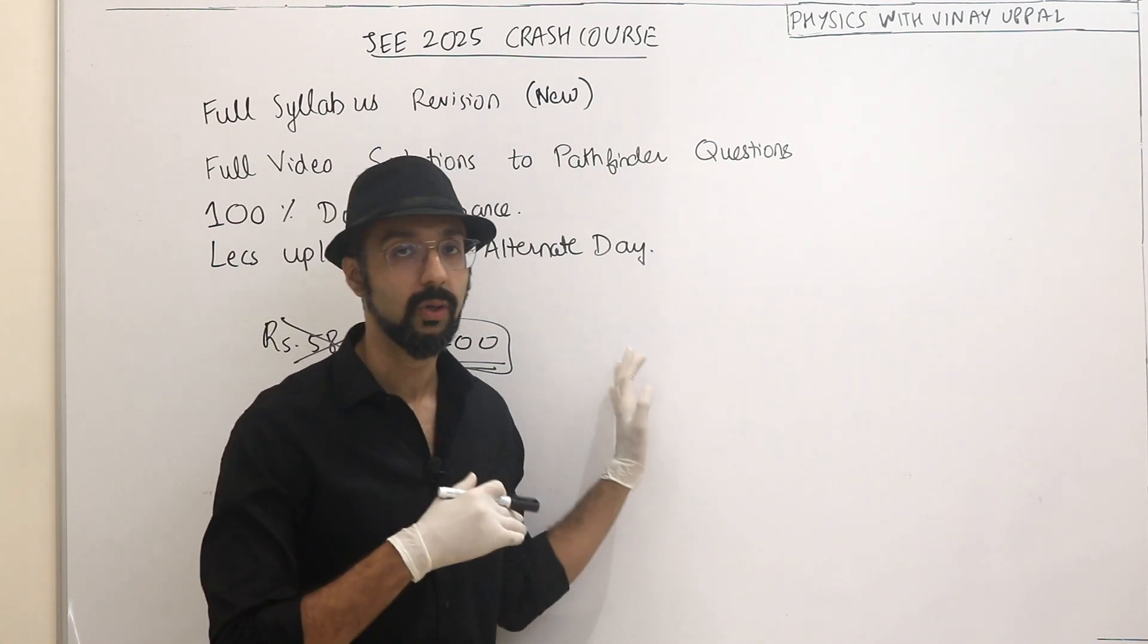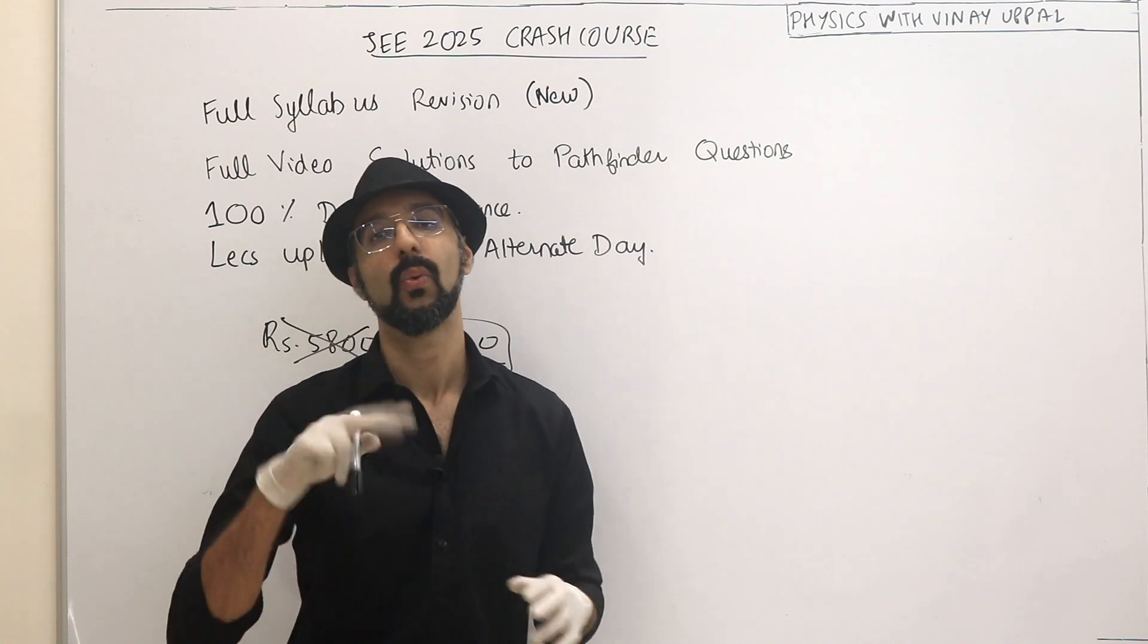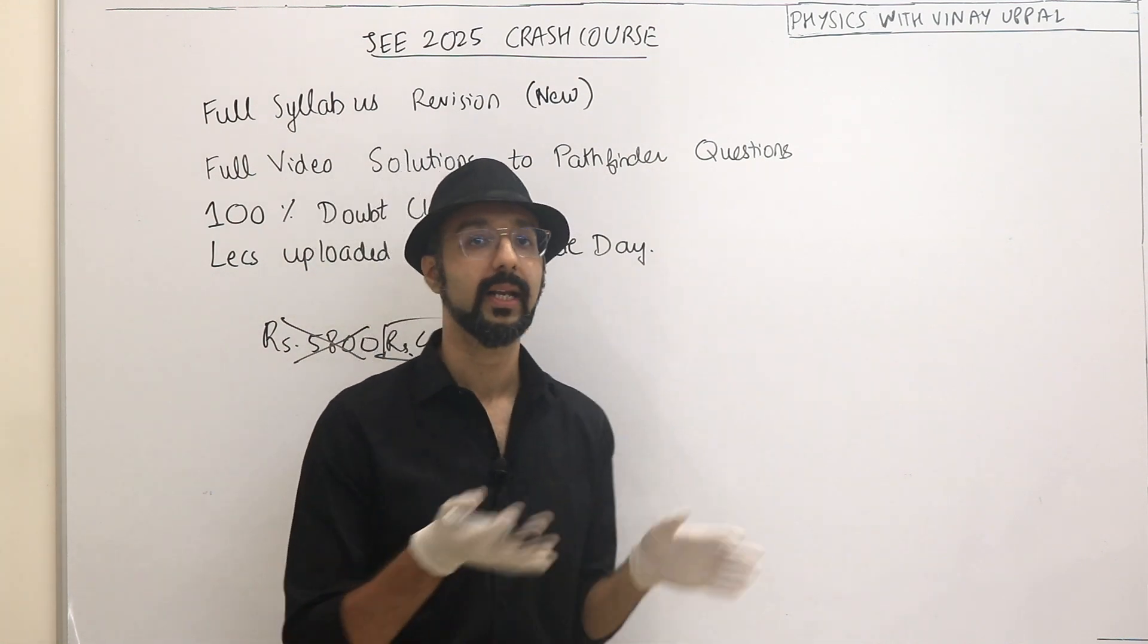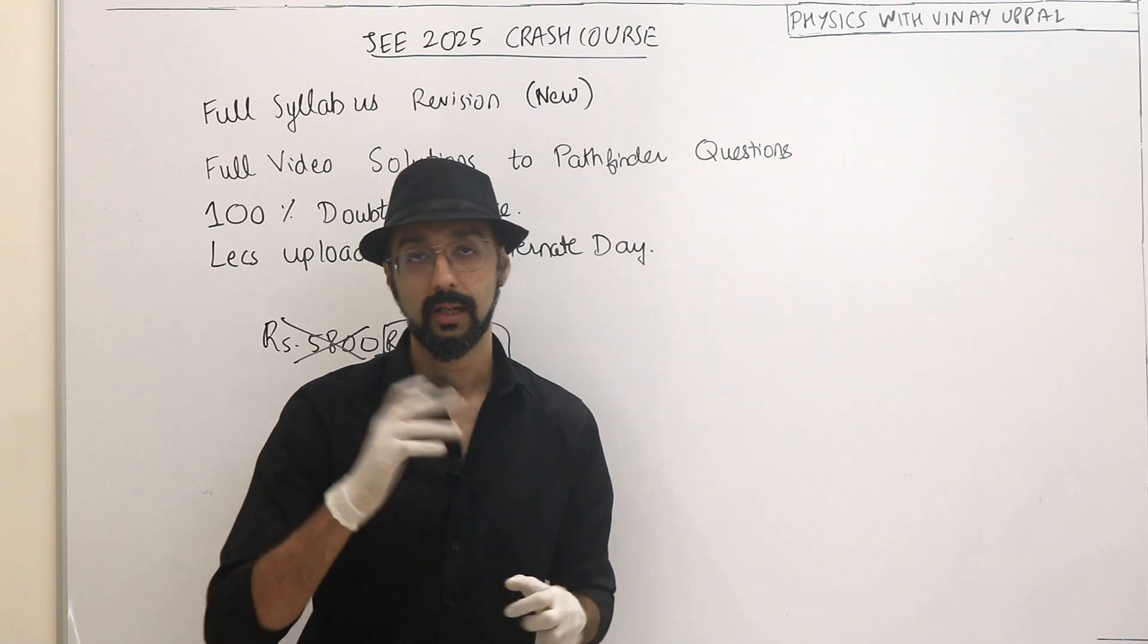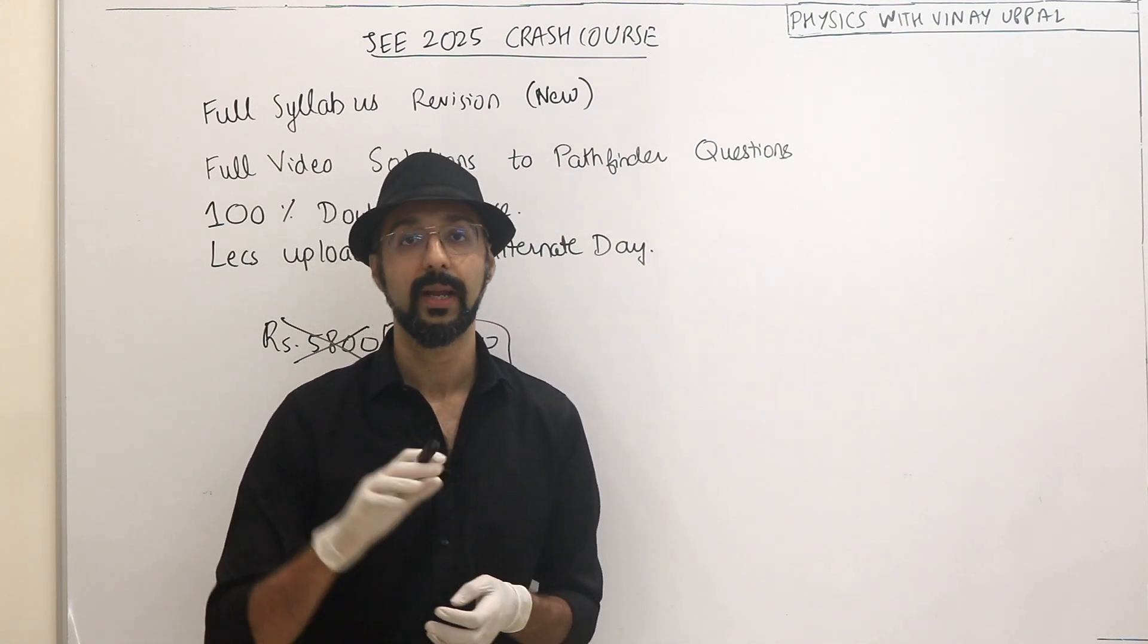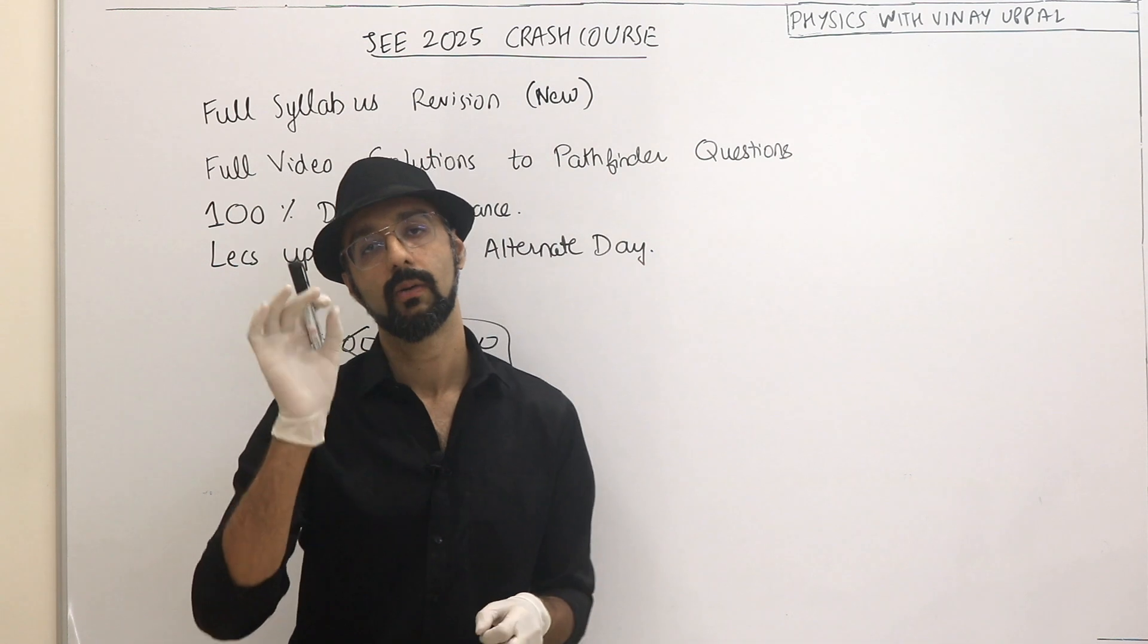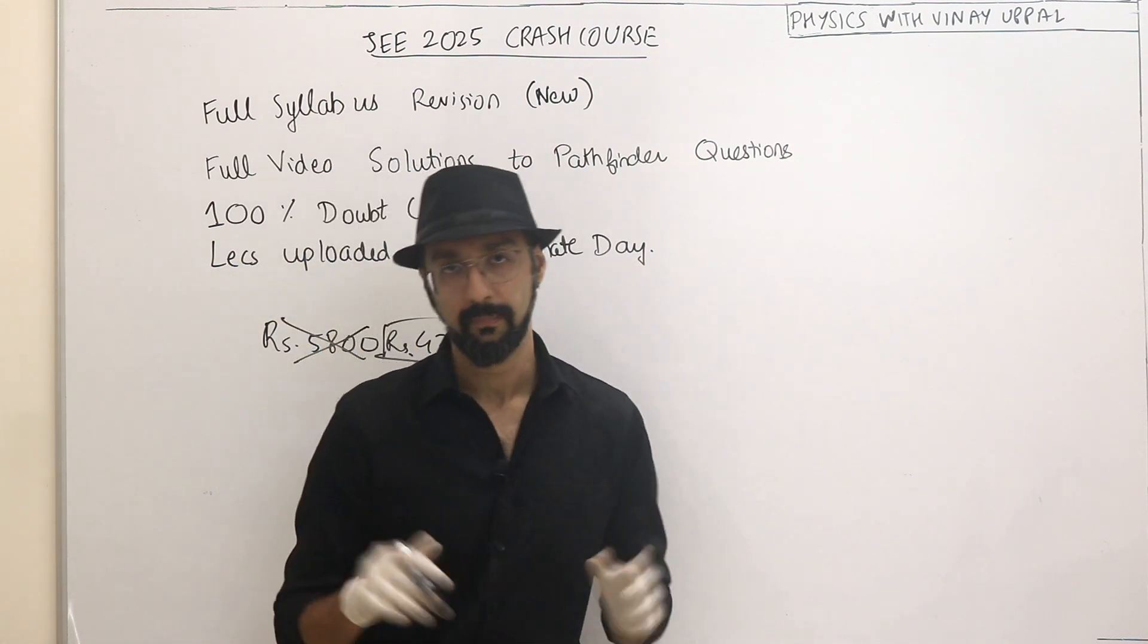So, effectively, the crash course you have enrolled, it will be free. You don't have to pay twice. Okay? So, don't be afraid that I have enrolled for the crash course. If I enroll for the 12th syllabus, then I have to double pay for the crash course. That's not that. You will get the coupon code from me. All right?